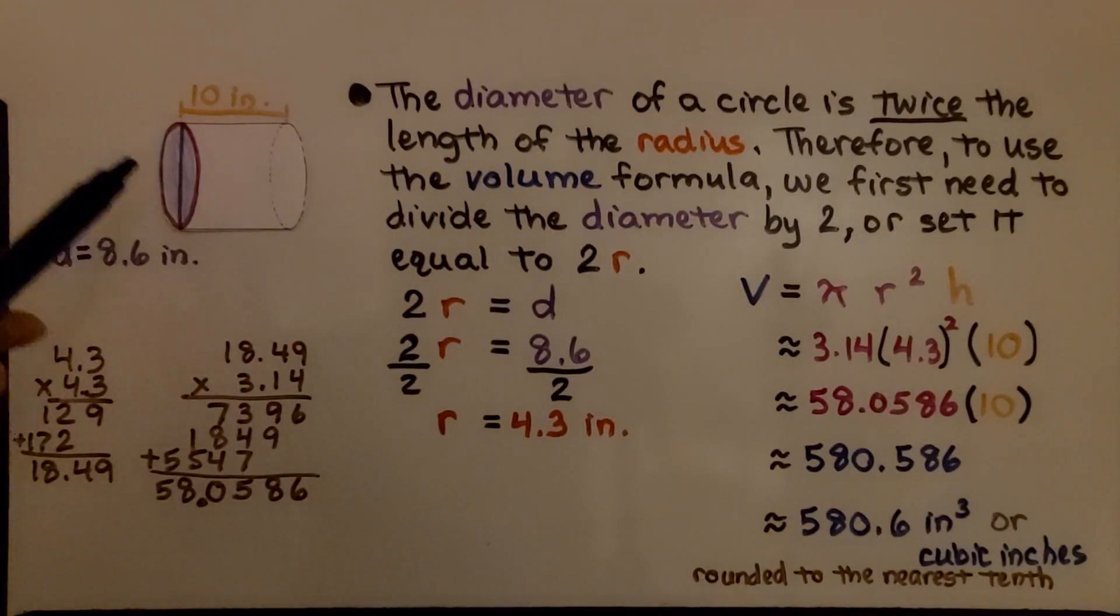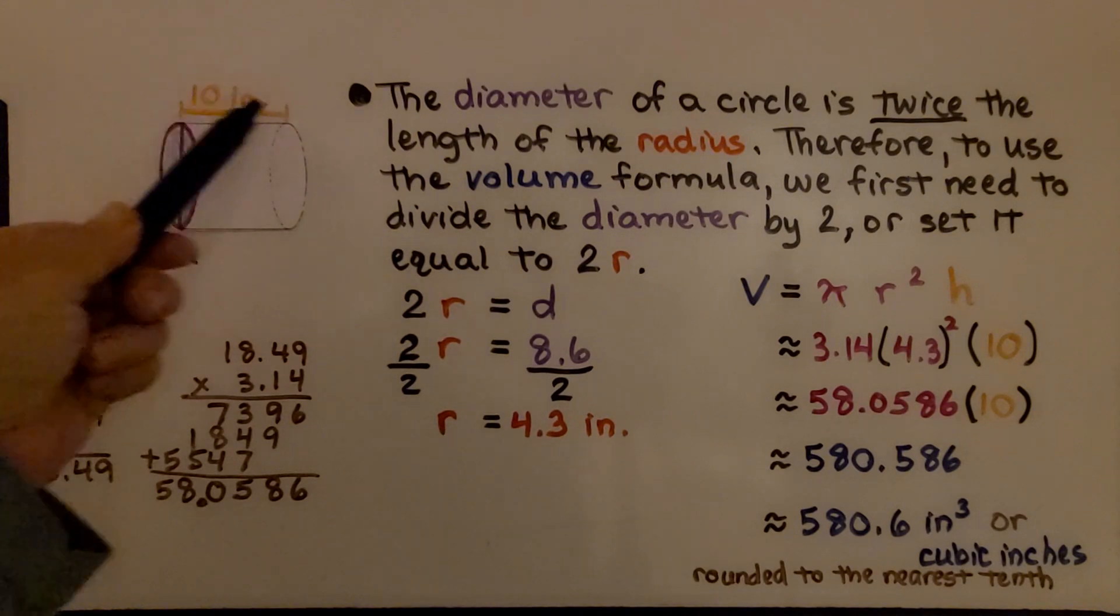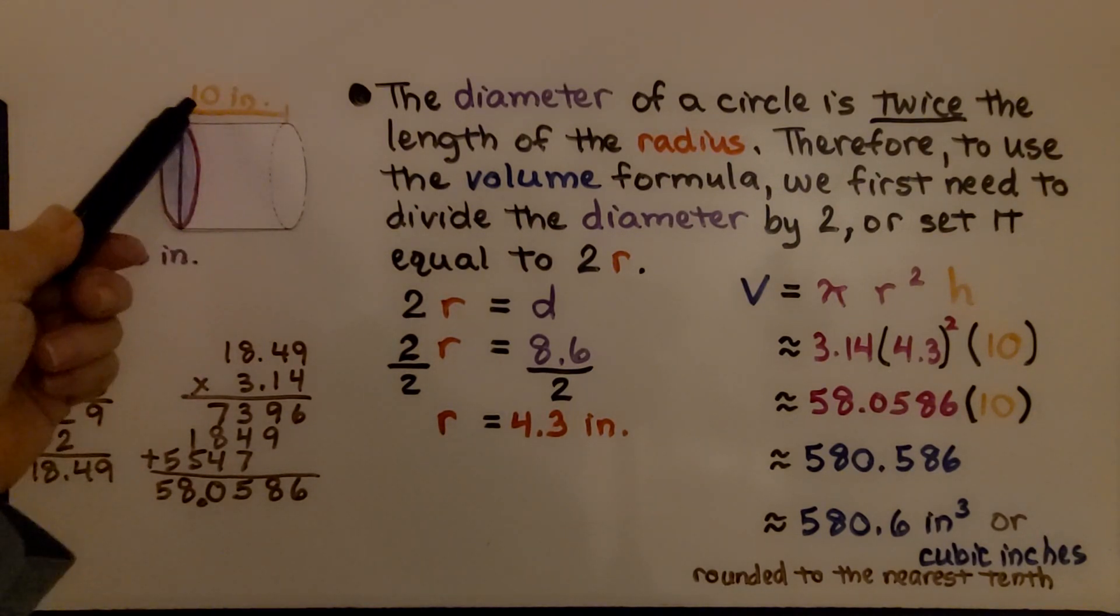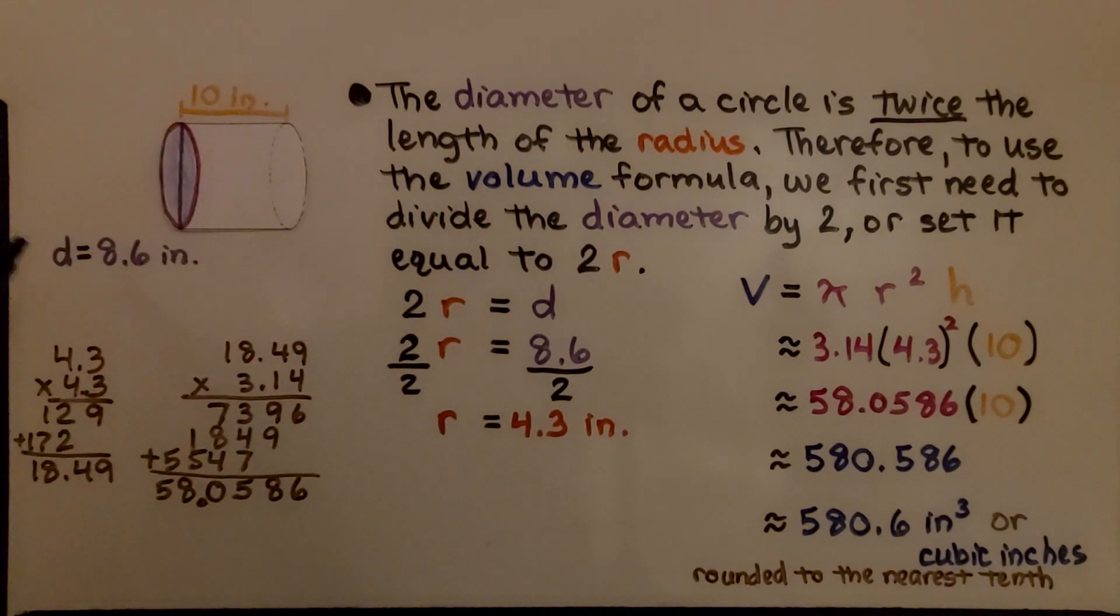Now this cylinder is laying on its side. We can see that the length of the cylinder is 10 inches, so that's going to be the height, but it's not giving us the radius. It's giving us a diameter of 8.6 inches.